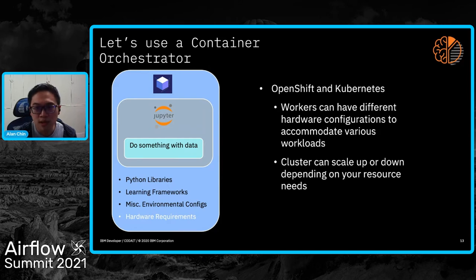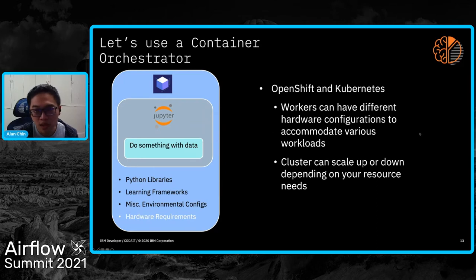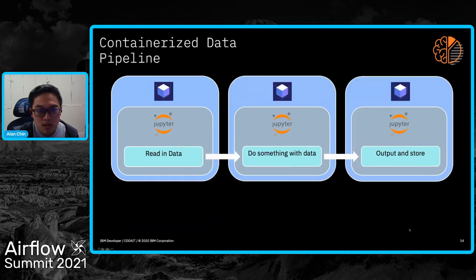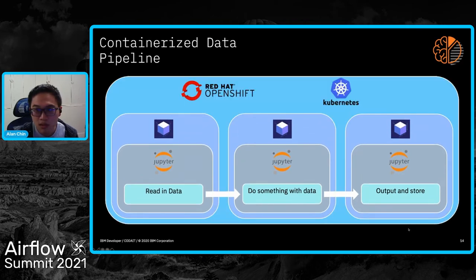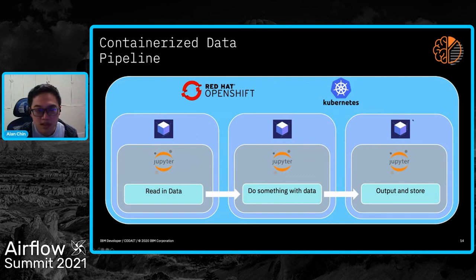So we want to use a container orchestrator so we can configure these. We add workers with different architectures and hardware configurations — some workers might have solid state storage with storage classes you can request, extra memory, GPUs and TPUs, and the ability to scale these resources up and down as needed. Ultimately, your pipeline ends up looking something like this — a lot cleaner, more modular, portable, scalable. And at this point there are a lot of technologies in play and a lot of orchestration code that someone will need to create in order to make something like this run.